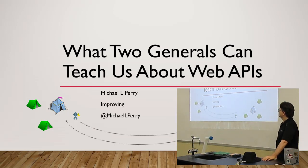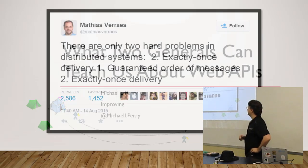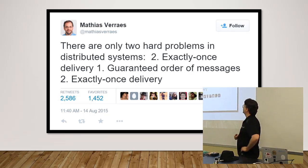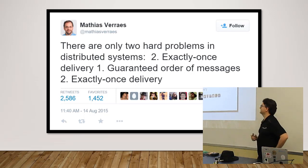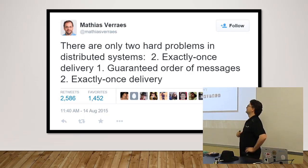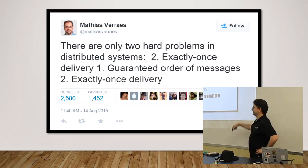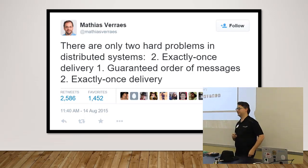So there are these two guys trying to send messages back and forth and keep things in sync between them. It comes down to the fact that in distributed systems there are only two problems: number one, exactly once delivery; number two, exactly once delivery. And guaranteed order of messages. Anyway, that is precisely the problem we are trying to dig into when we talk about these two generals.